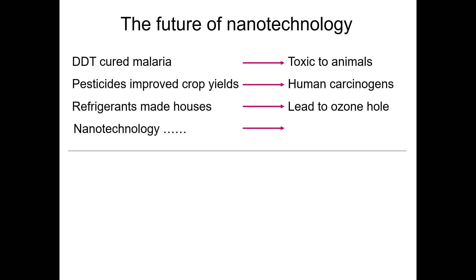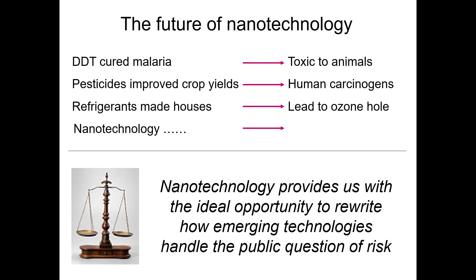Similarly, refrigerants made things possible but led to ozone holes. Now the question is: nanotechnology has brought development and done more for the better future of human beings, but what will it lead to? What will be the major drawbacks or major harm of nanotechnology for human beings, as we have seen with previous developments?